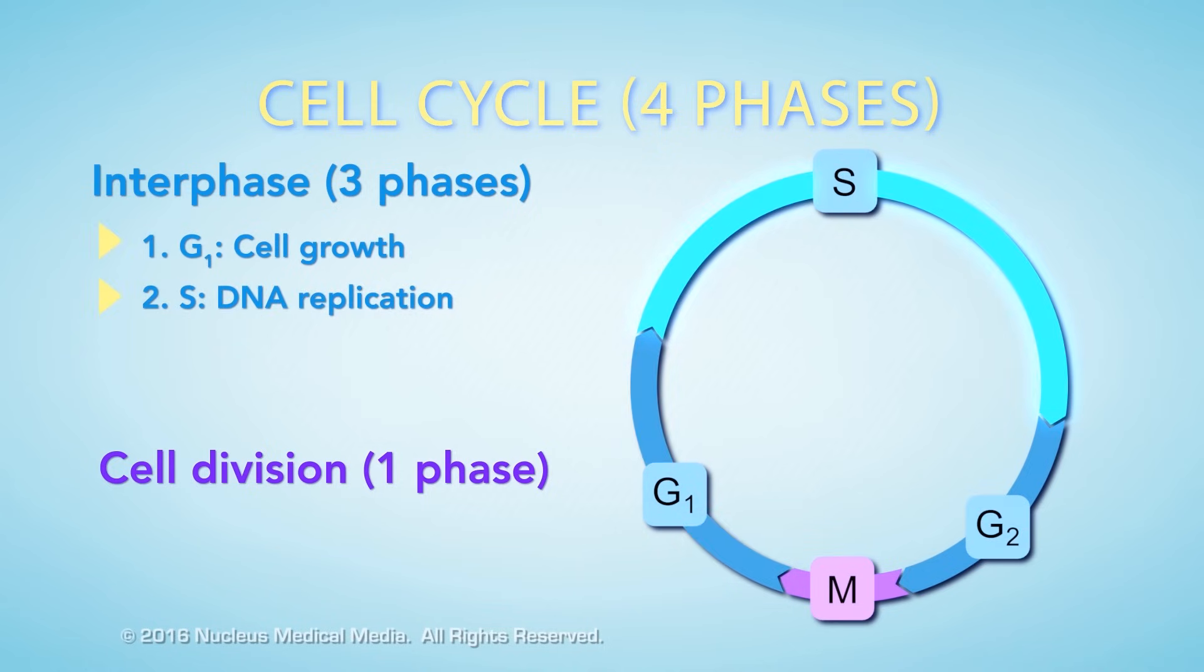The cell enters the S phase when it needs to divide. In this phase, the cell replicates its DNA. Replication just means the cell makes a copy of its DNA. In G2, the cell undergoes further preparations for cell division.